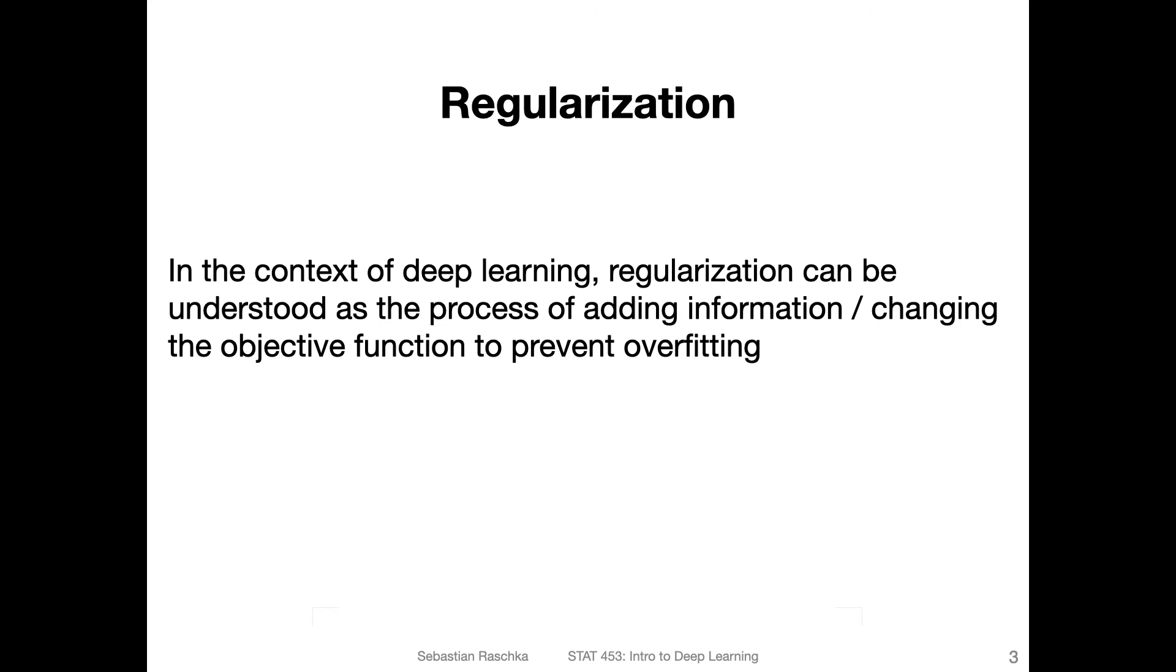So this umbrella term called regularization. Regularization broadly means the process of adding information or changing the objective function to prevent overfitting. What I mean by changing the objective function - if you heard about L2 normalization, there's usually a constraint that we add to our loss function. We will talk about this in this lecture. So broadly speaking, it's making changes to the learning process to prevent overfitting.